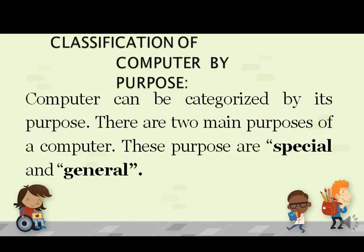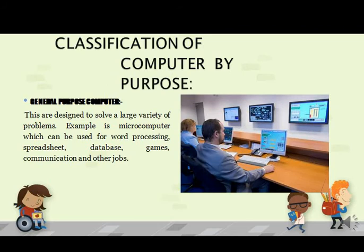The second classification is based on purpose. Purpose is again classified into two categories: general purpose computer and special purpose computer. General purpose computers are those which have no special or particular purpose — we can use them for anything. For example, we can create a document, calculate results, or create a database using this computer.